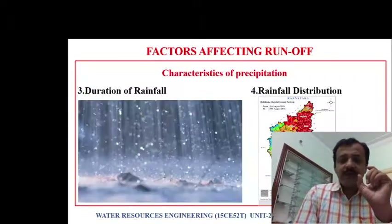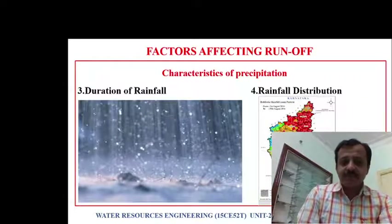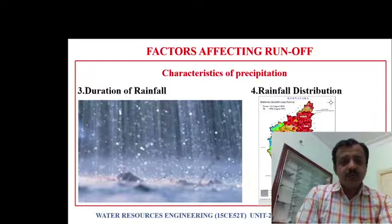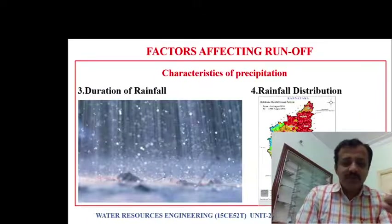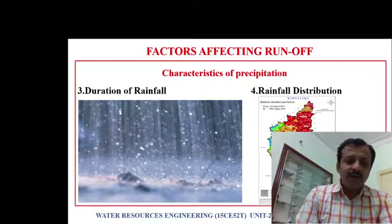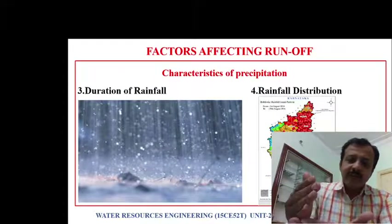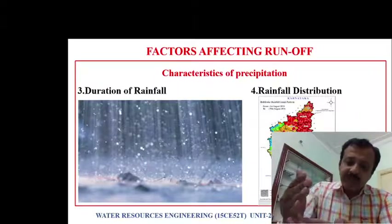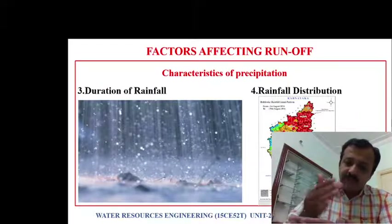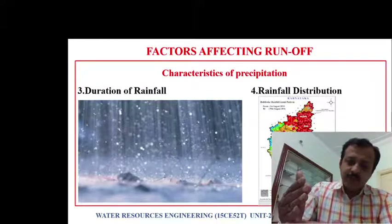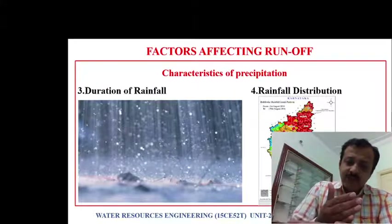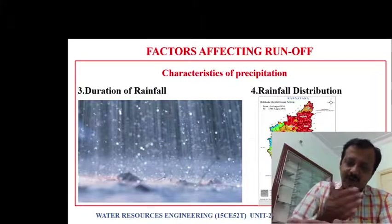The next characteristic of precipitation is duration of rainfall — how much time the rainfall has occurred. If the duration of rainfall is more, more will be the runoff.